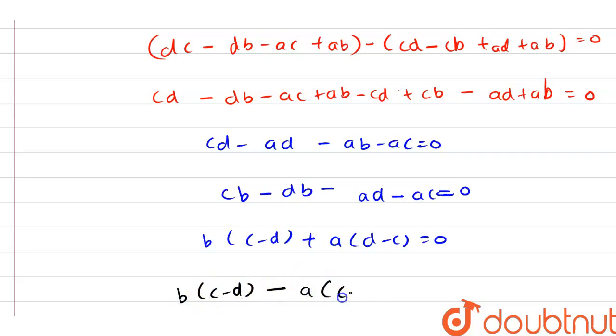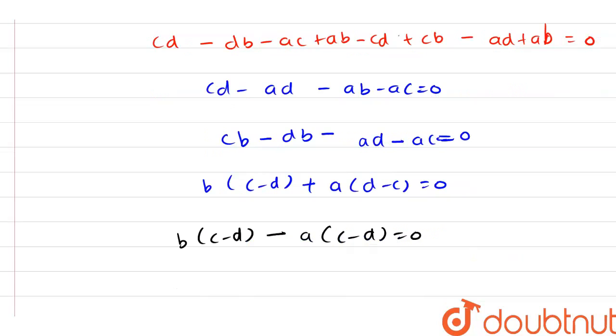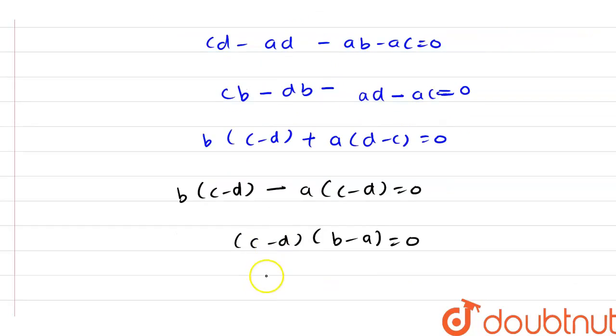From here we have C minus D into B minus A, and this whole value is equal to 0.